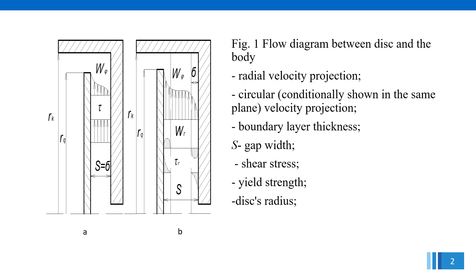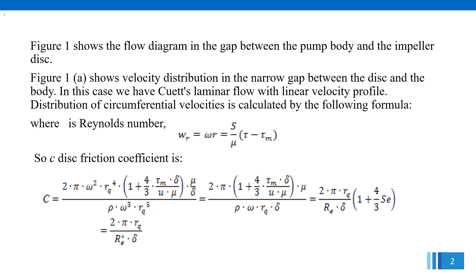Figure 1A shows the flow diagram between the disk and the body, including radial velocity projection, circumferential velocity projection, boundary layer thickness, gap width S, shear stress, yield strain, and disc radius. Figure 1A shows the flow diagram in the gap between the pump body and the impeller disk, and the velocity distribution in the narrow gap between the disk and the body. In this case, we have fluid laminar flow with a linear velocity profile.